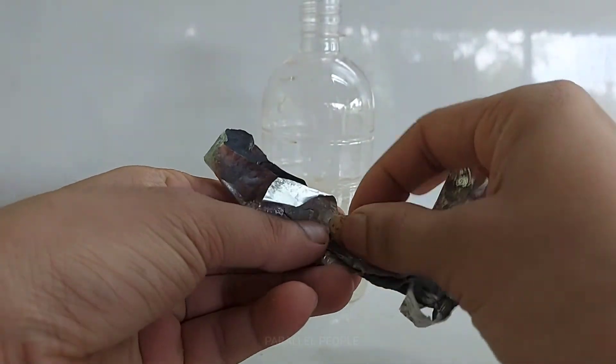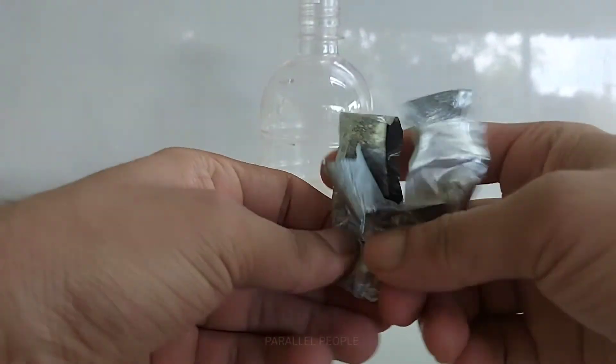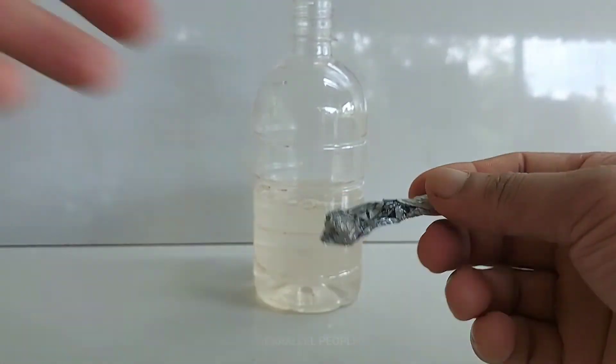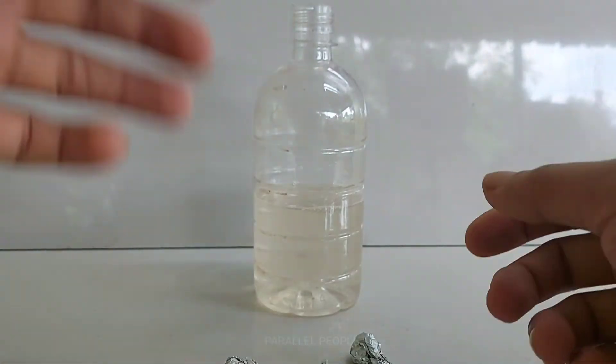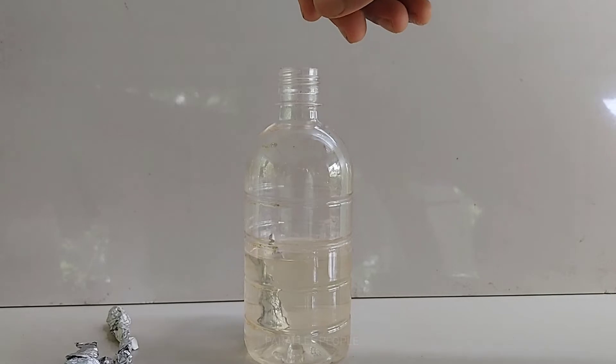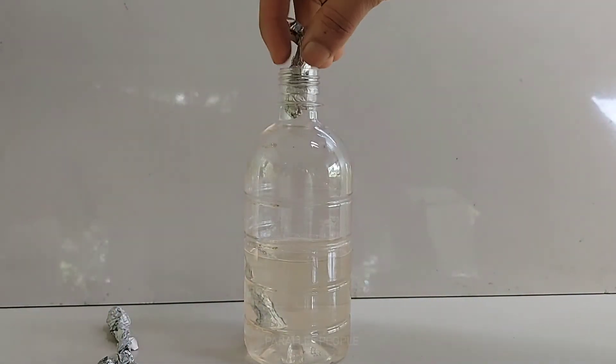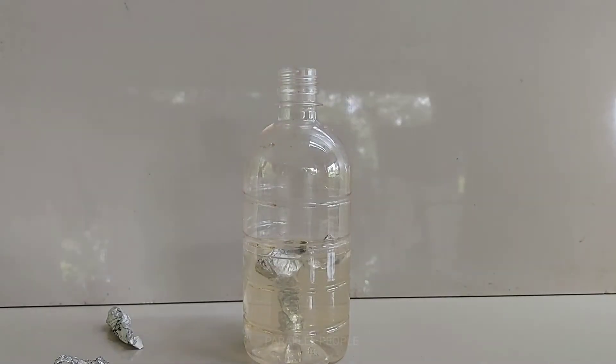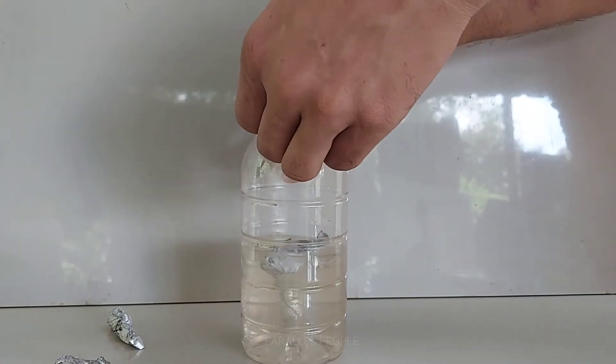Now we need some aluminum foil for this experiment. You need to wrap it around a weight, you can take a stone or something like that, because this weight is necessary for this aluminum foil to go down into the solution. Otherwise this aluminum foil will float at the top of the solution and the reaction will not proceed as fast as we expect, so we need it to sink down to the solution.